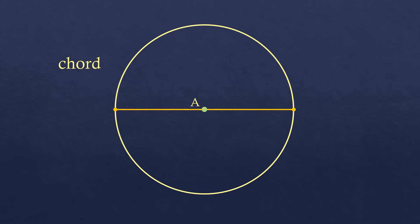If the chord passes through the center, it is special because it is the longest chord. Any chord that passes through the center is what you call the diameter. As long as the chord passes through the center, it is the longest chord and it's called the diameter.